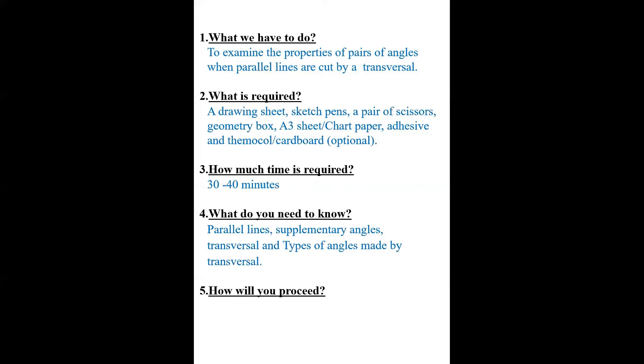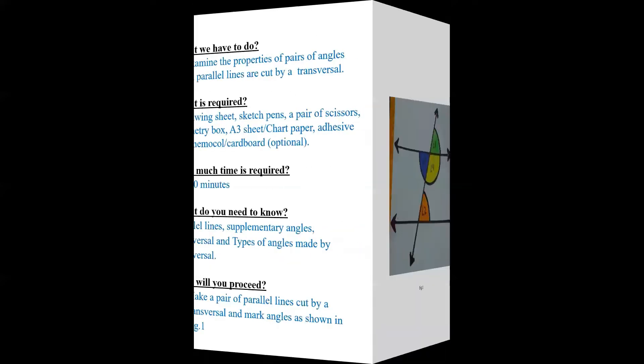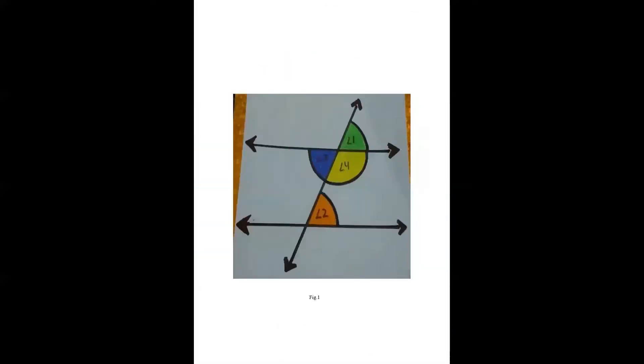How will you proceed? You will make a pair of parallel lines which will cut by a transversal and mark angles as shown in the figure. You will make a figure on a drawing sheet like this and take the compass to make these angles. Put your compass on this vertex and then make the arc like this. And with the same compass make another arc also. This would give you a proper angle formation. After making this figure, what you have to do?